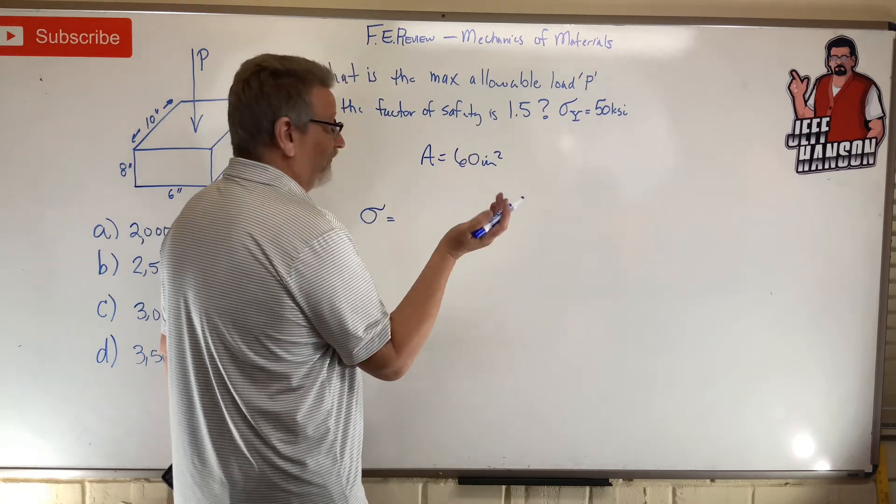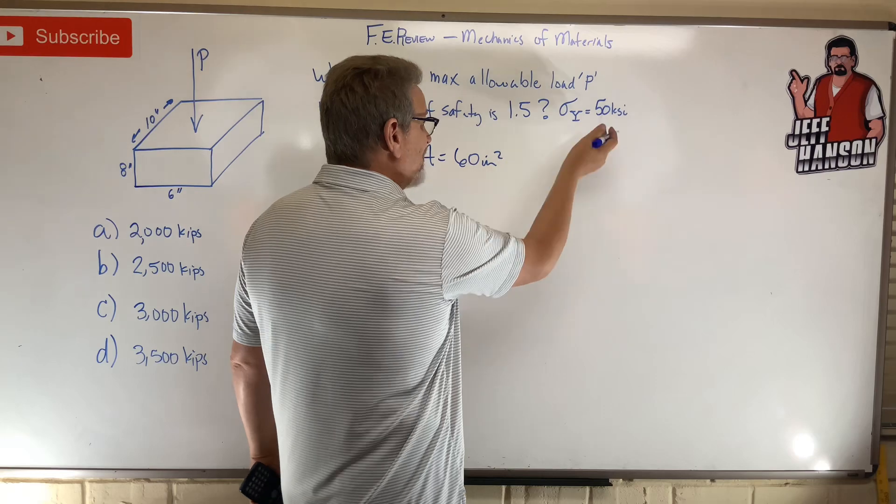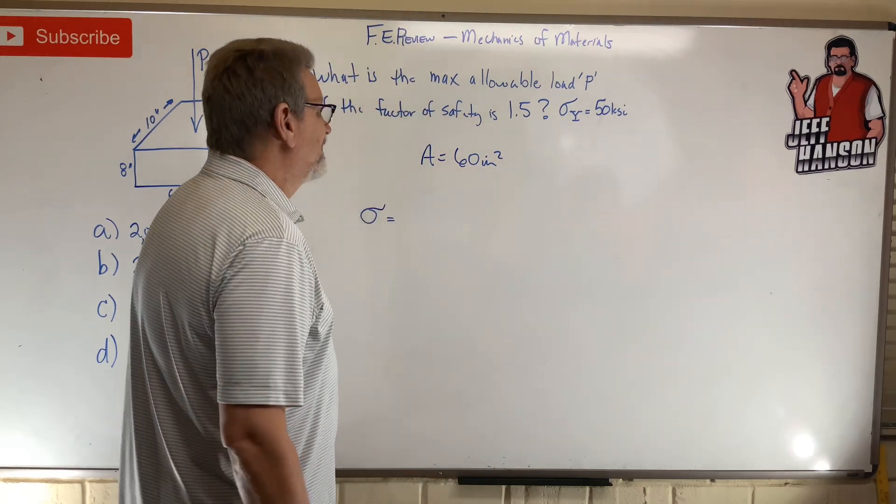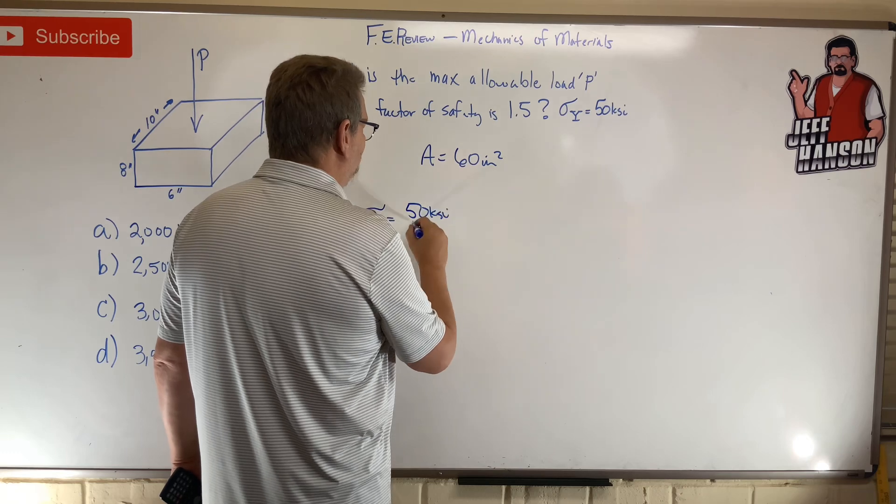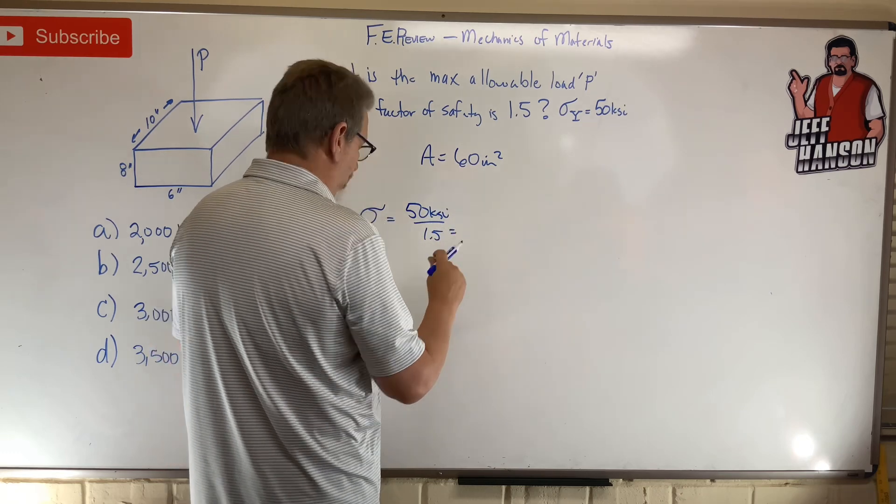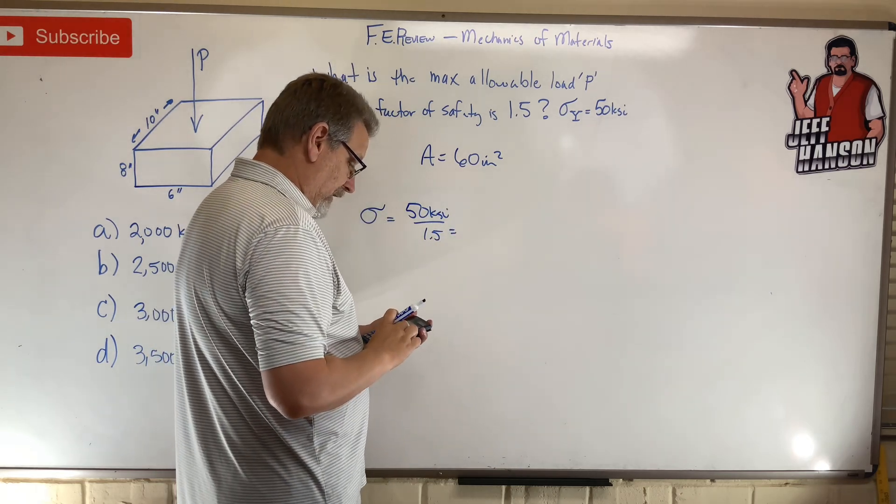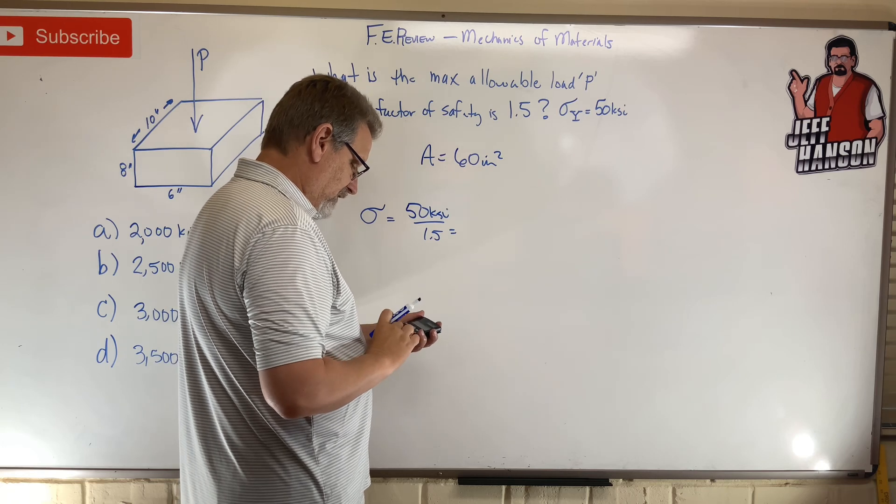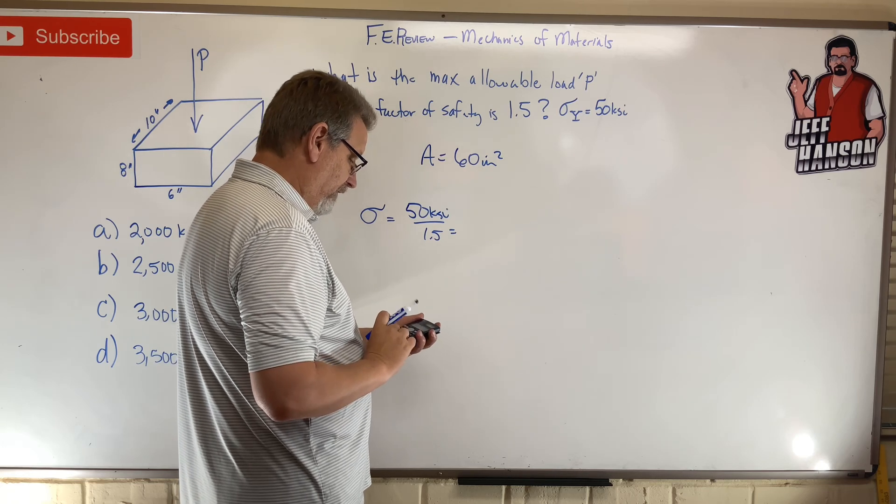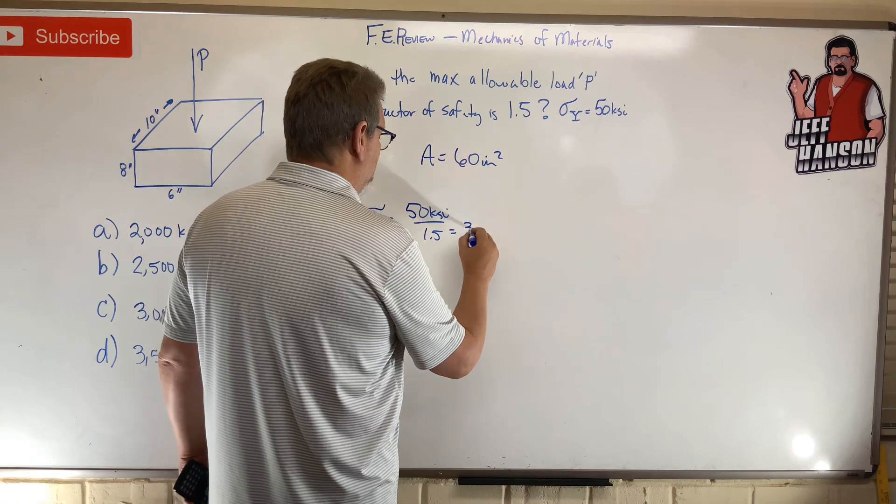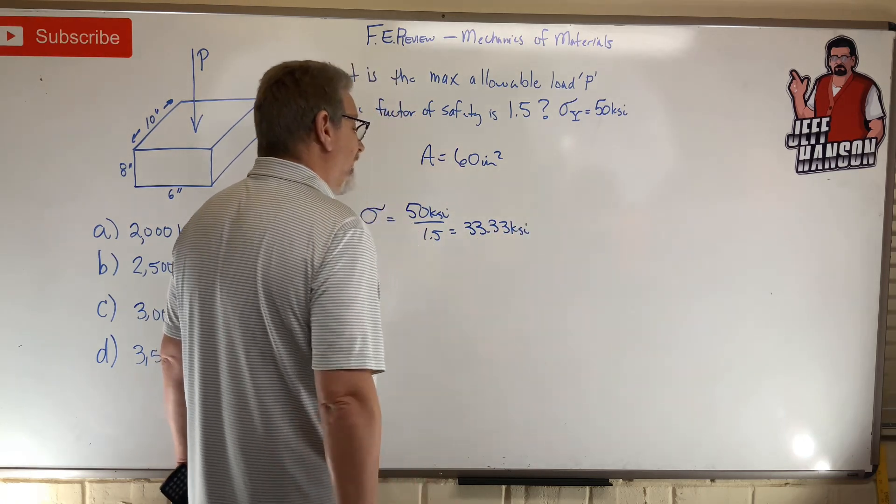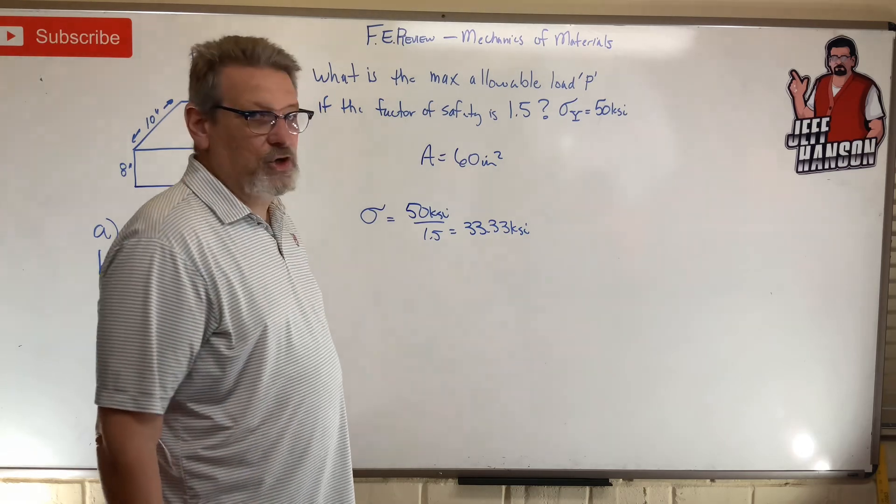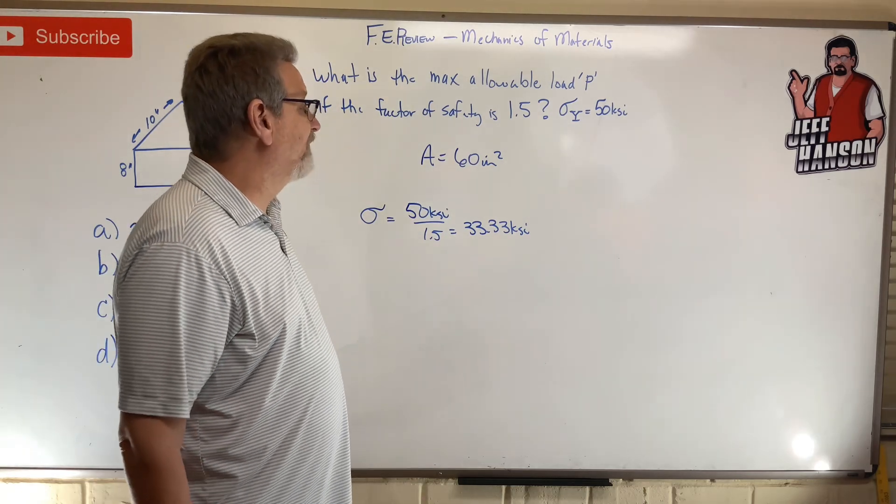It's divide, isn't it? 50 KSI divided by 1.5 equals—50 divided by 1.5—33.33. So that is my allowable stress that I'm going to use, and now I'm at 1.5 safety factor. Now I can just solve it like a regular problem.